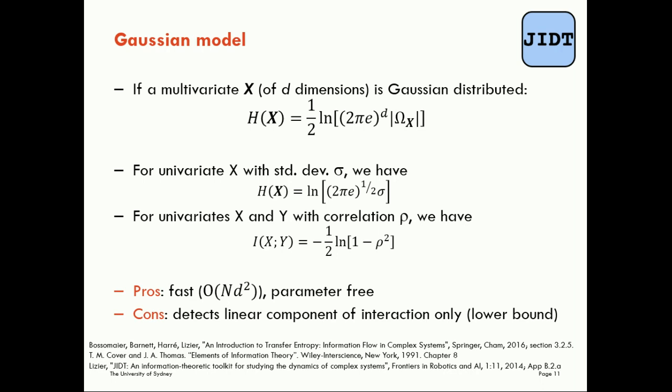Now when we want to compute our information theory measures using this Gaussian model assumption there are pros and cons as with every estimator. The biggest pro is it's really fast. We can do this linearly in the data size. So as the amount of data grows the difficulty grows only linearly which is fantastic. It's also parameter free.